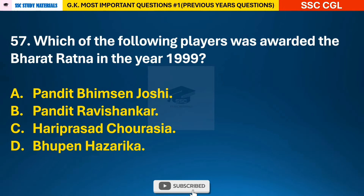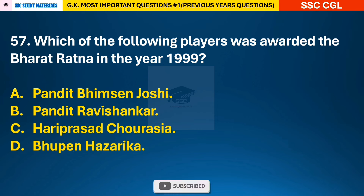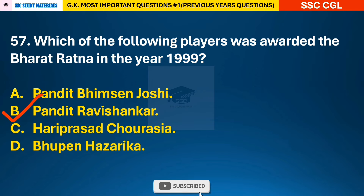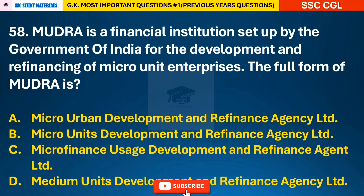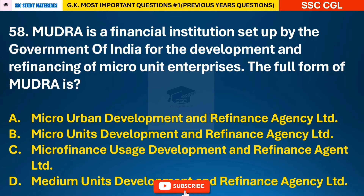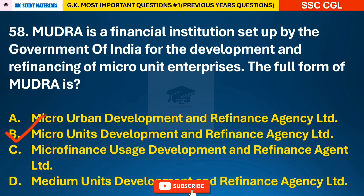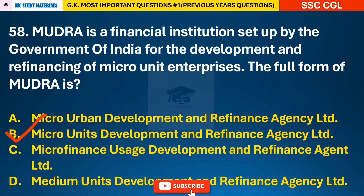Question 57: Which of the following players was awarded the Bharat Ratna in the year 1999? — answer A: Pandit Ravi Shankar was awarded the Bharat Ratna in the year 1999. Question 58: MUDRA is a financial institution set up by the Government of India for the development and refinancing of micro unit enterprises. The full form of MUDRA is — answer B: Micro Units Development and Refinance Agency Limited.